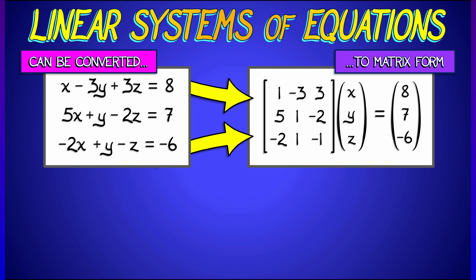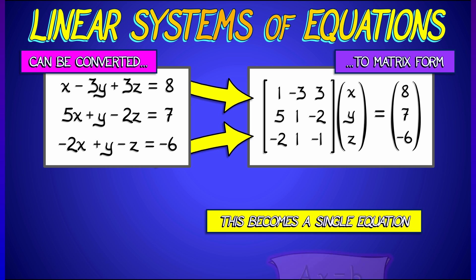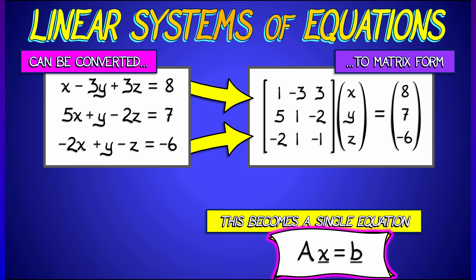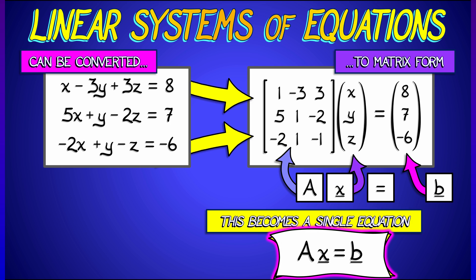So pack those variables x, y, z into a single variable, single vector. We're going to call that x with an underline. And then the right-hand sides, the 8, 7, negative 6, pack that into a vector. Pull out the coefficients, turn that into a matrix, a 3 by 3 matrix with all of those multiples of x, y, z in it. Call that matrix A, call the vector on the right-hand side B, we get a single equation of the form Ax equals B.